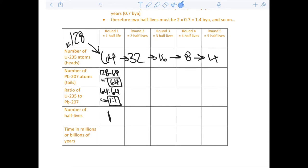The number of half-lives, this is the first half-life. An actual half-life of the decay of uranium to lead is 0.7 billion years.